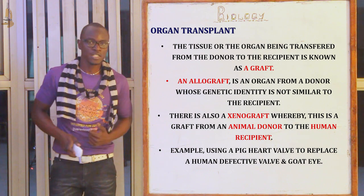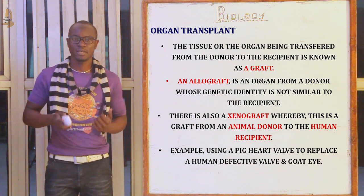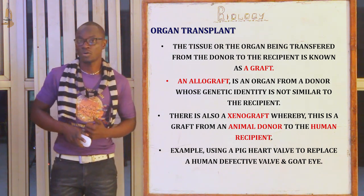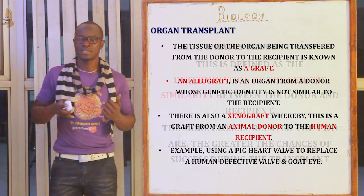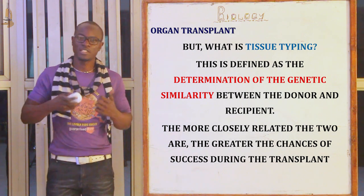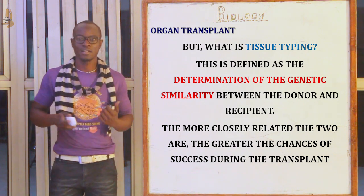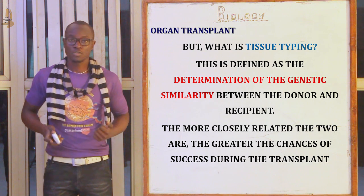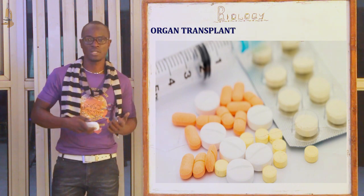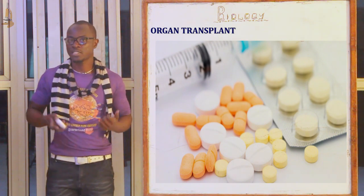The recipient's body will quickly recognize this as foreign and immune rejection will quickly kick in. To avoid immune rejection of a graft, tissue typing is done or drugs are administered to suppress the recipient's immune response. Tissue typing is the determination of the genetic similarity between the donor and the recipient. The more closely related they are, the greater the chances of success for the transplant. It should also be noted that immunosuppressive drugs administered during grafting may suppress the normal immune response against pathogens, making the recipient susceptible to different environmental diseases.